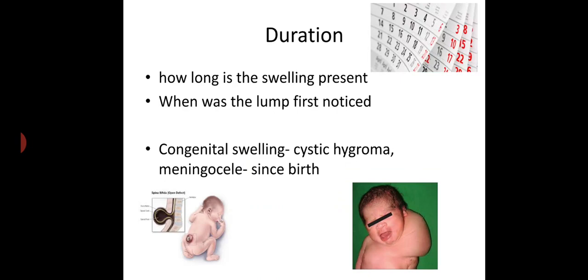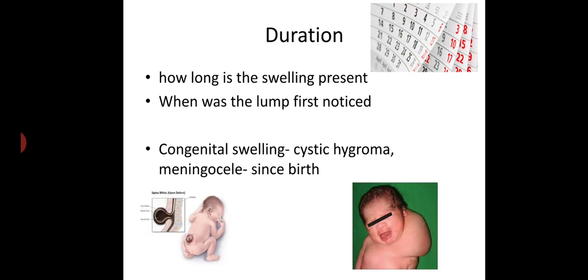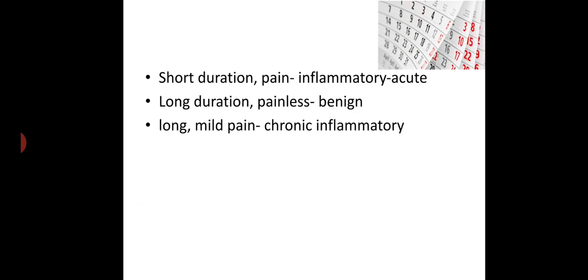First, history. The first aspect is duration — how long is the swelling present and when was the lump first noticed. For example, in case of congenital swellings like cystic hygroma or meningocele, the lump will be noticed since birth. If the duration is short and associated with pain, the cause may be acute inflammatory. If the duration is long and painless, it is mostly a benign neoplastic cause.